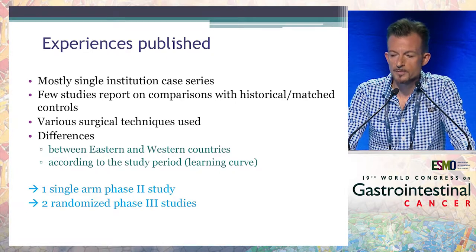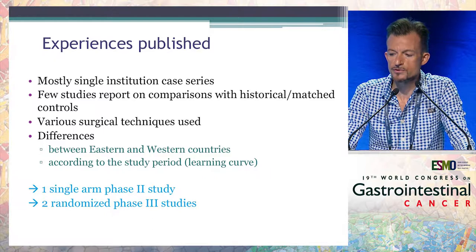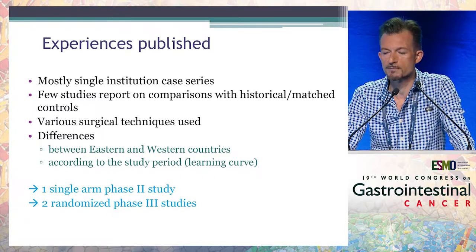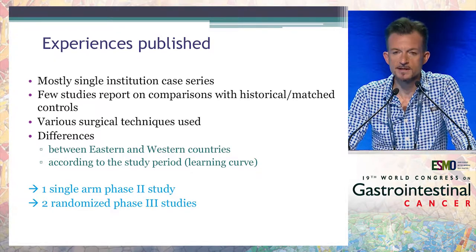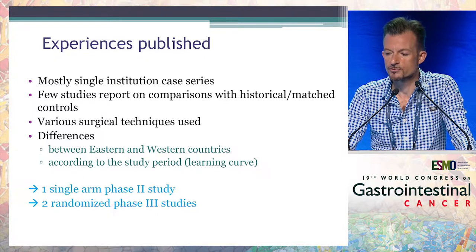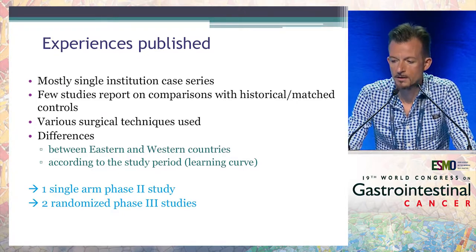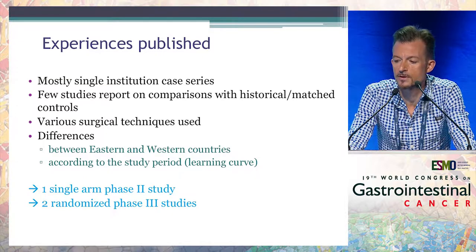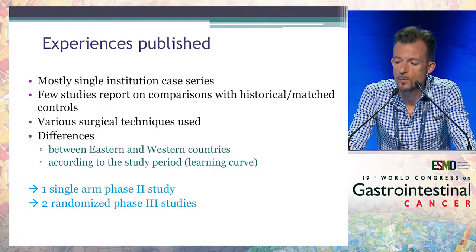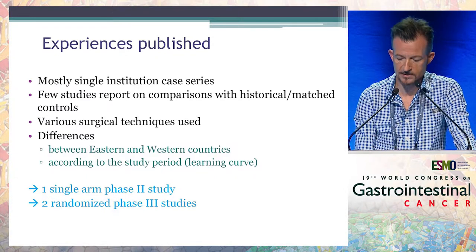What are the data published today? We have mostly single-institution case series with few studies reporting comparison between historical and matched cohorts. There are various surgical techniques that have been used and many differences between eastern and western countries, specifically regarding the learning curve, given the difficulty of such a skillful technique. However, we now have one single-arm phase 2 study and two randomized phase 3 studies, and I will highlight these.